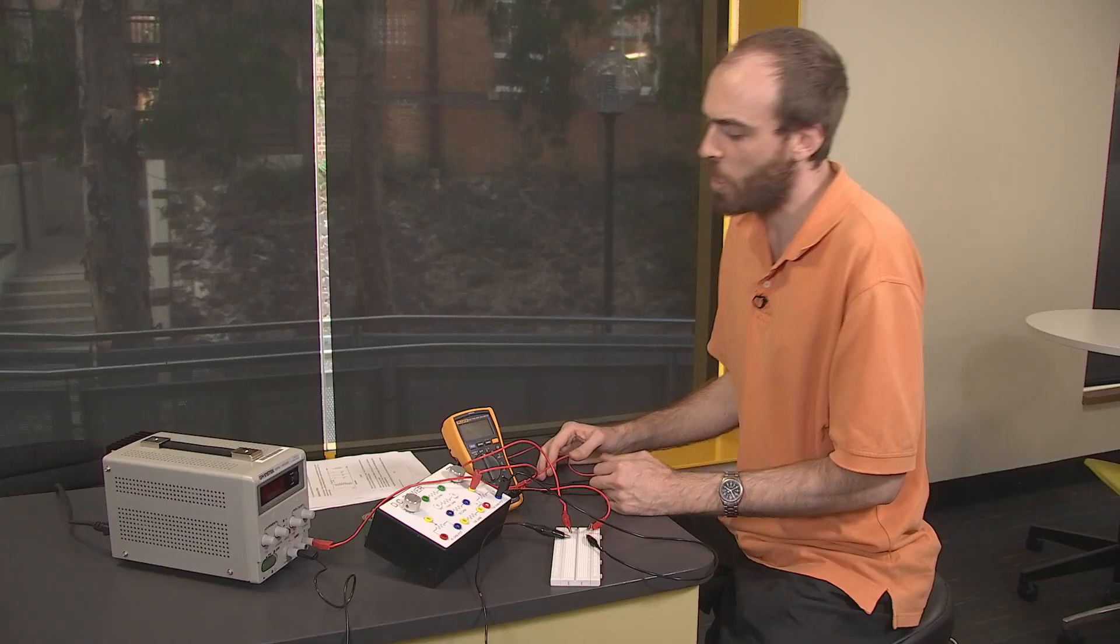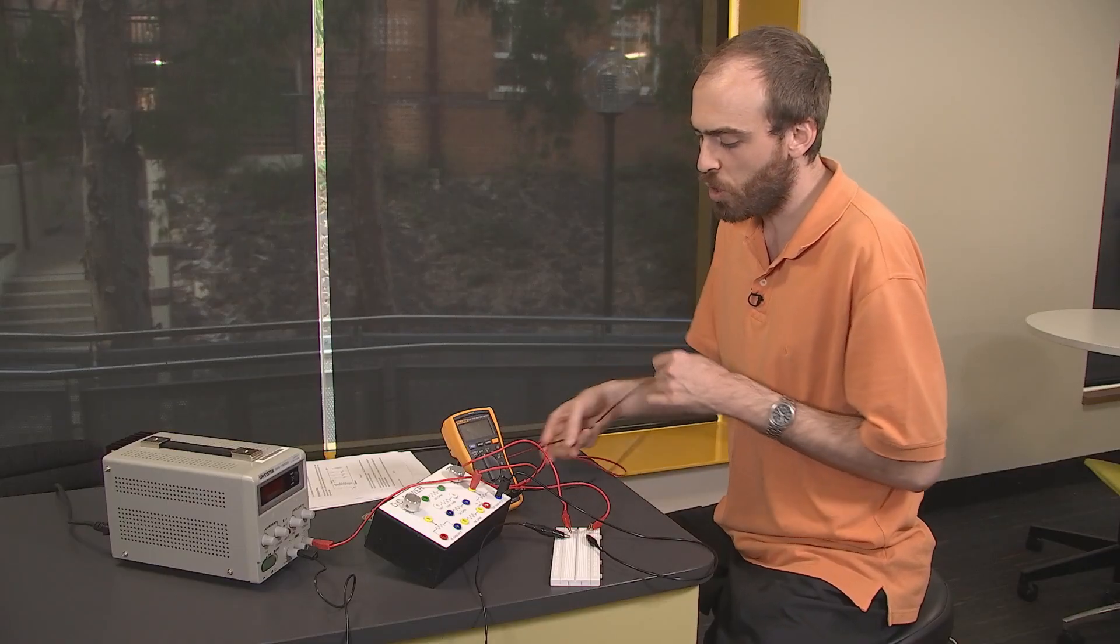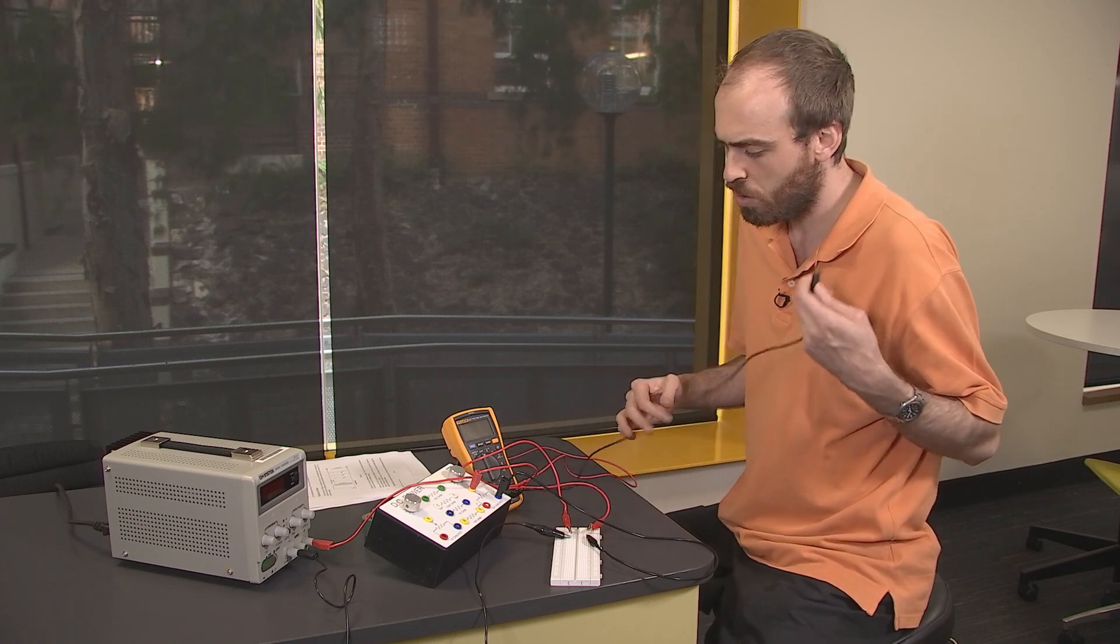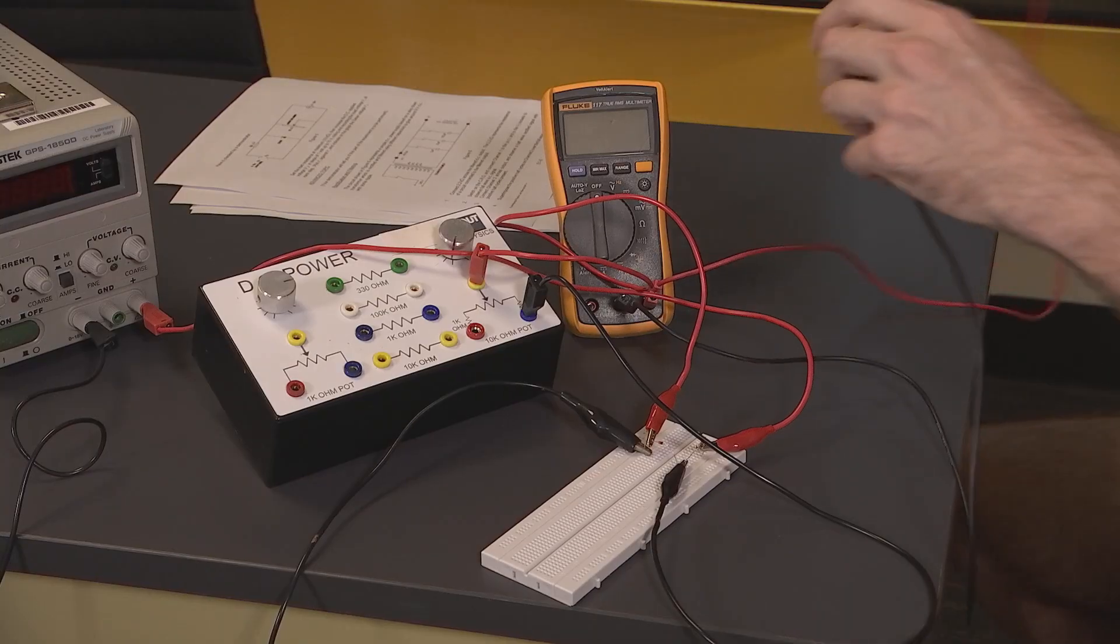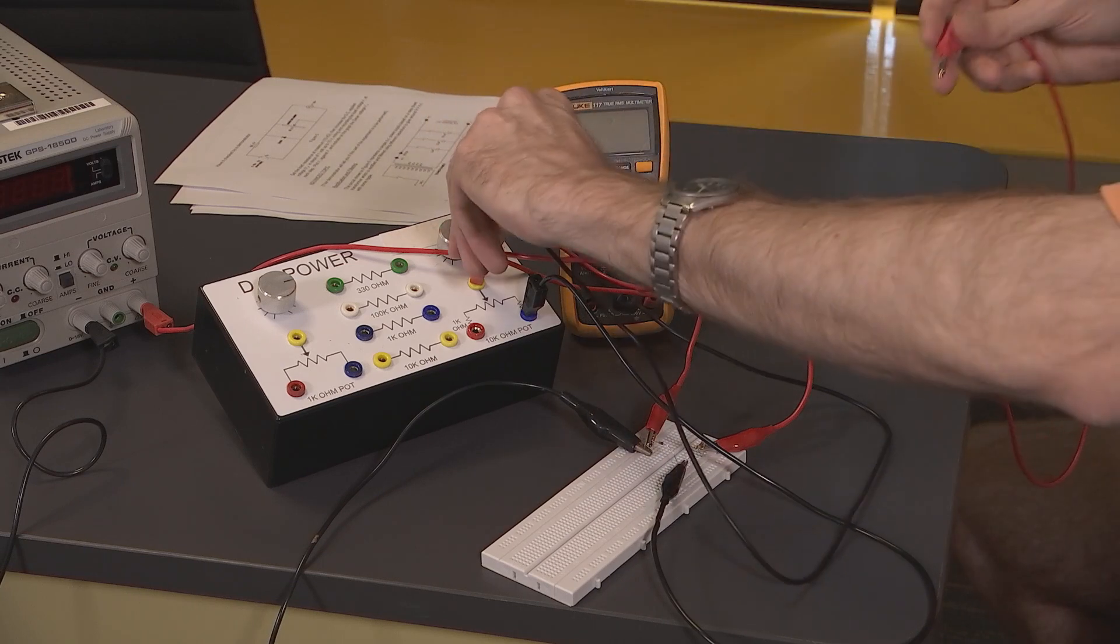The final thing to do will be to set up our multimeter to measure voltage. So what we want to do is measure the voltage across the potentiometer.